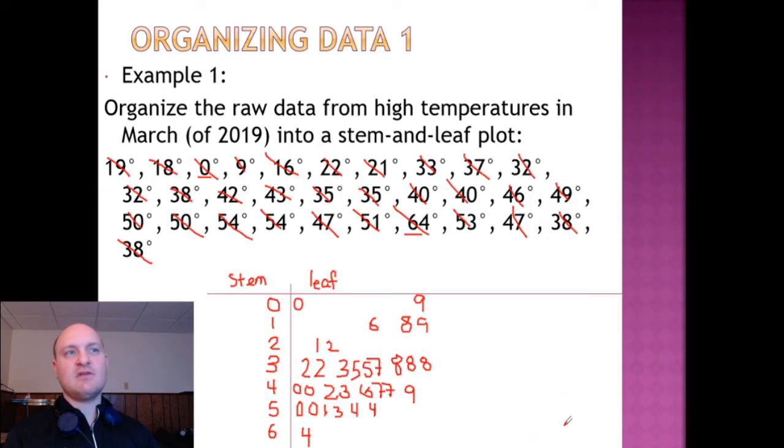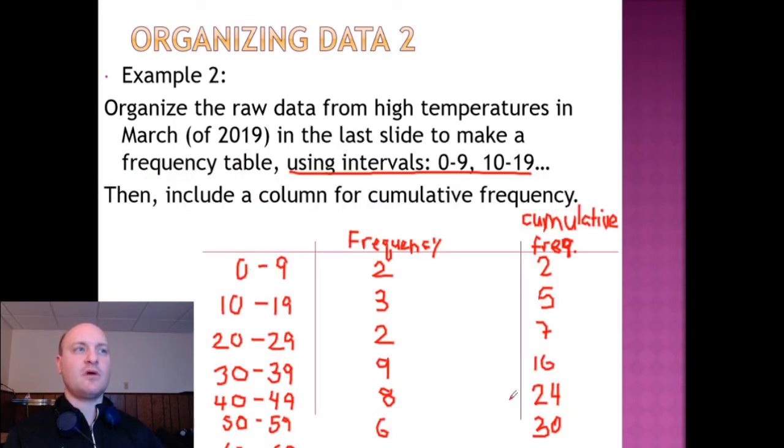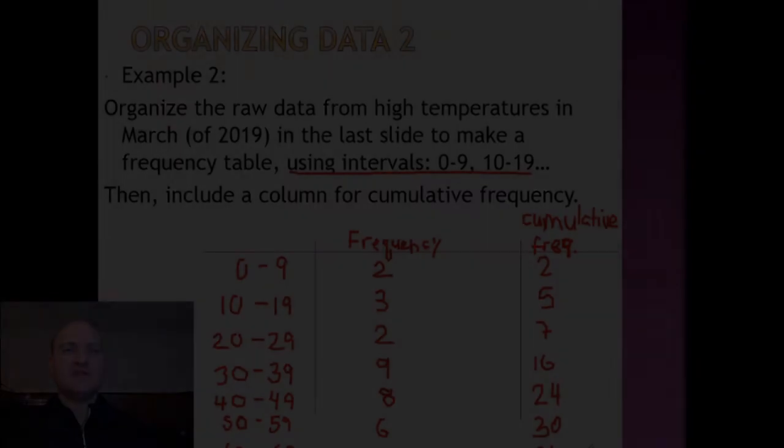And finally, in the 60 to 69 range, we have one value of 4. So we'll put 1 in for frequency and our cumulative frequency will make 31. This is our finished frequency table and it includes a column for cumulative frequency.